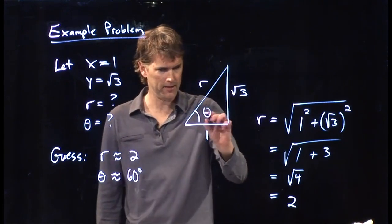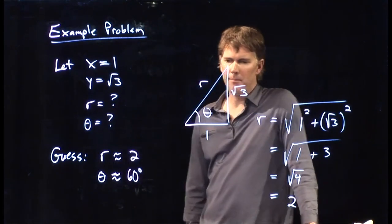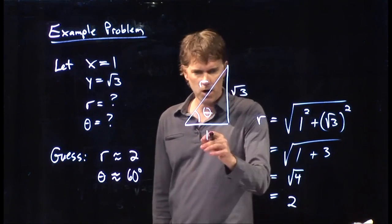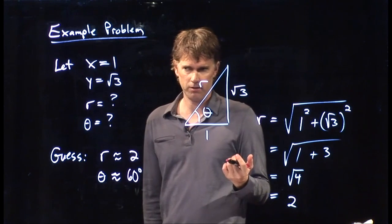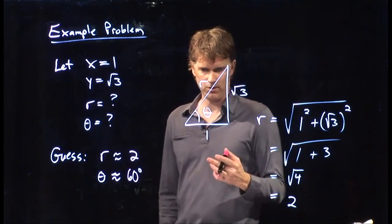What about theta? Well, you might remember that a 1 square root of 3 2 triangle is a very special kind of triangle. It's a 30-60-90 triangle.